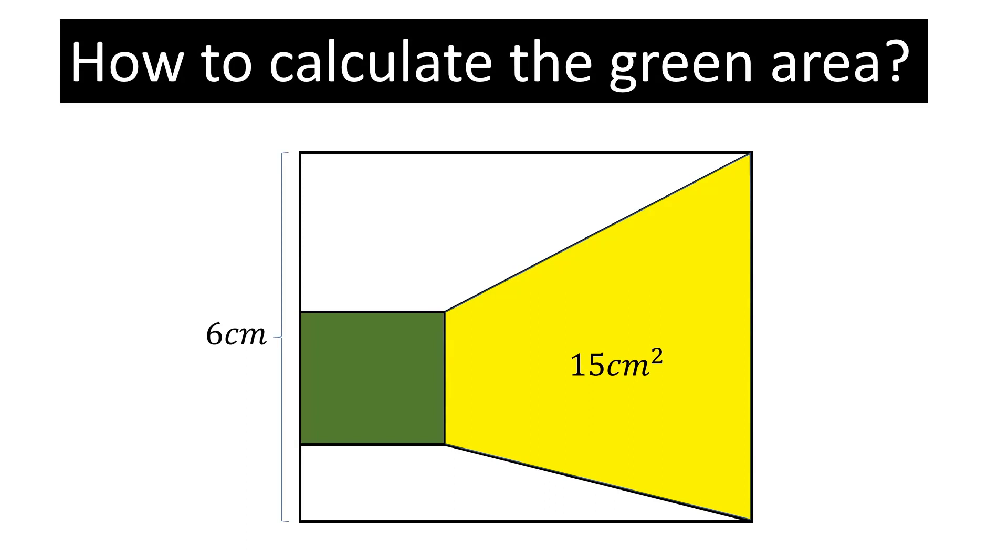In this question there is a square and the side of the square is 6 centimeter and the yellow area is a trapezium and is equal to 15 centimeter square. We have to find the green area which is the area of the small square.